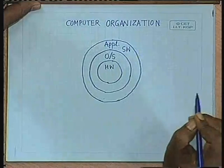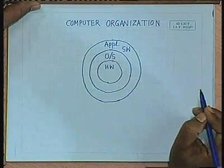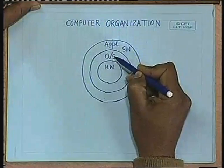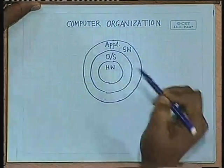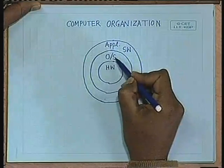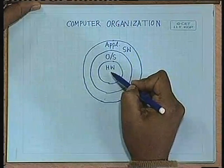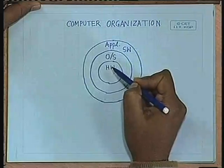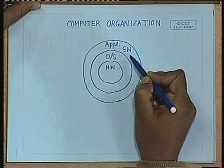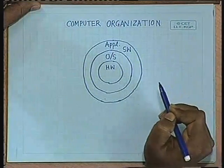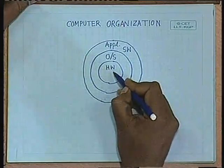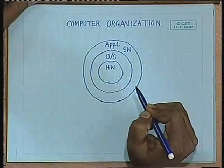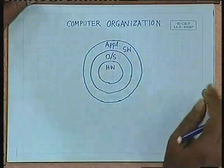Whenever a program is to be executed, the program that we write remains at the application software level. Then as the program is to be executed, it is the operating system which gives an interface between the application level software and the hardware resources of the computer. The basic job of the operating system is to manage the hardware resources so that the same hardware resource can be used by one or more application level softwares at the same time. In this course, we will concentrate on the hardware resources. To see what hardware resources we need in a computer, let us take a very simple software example.